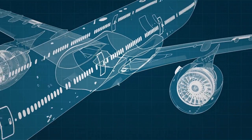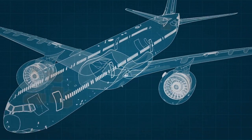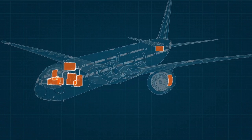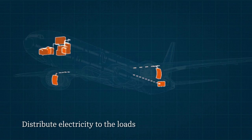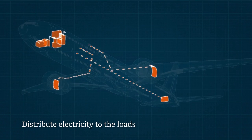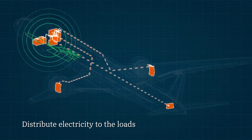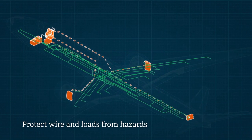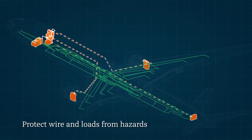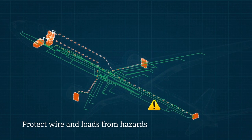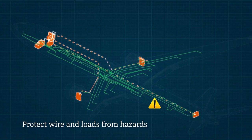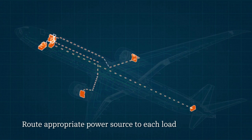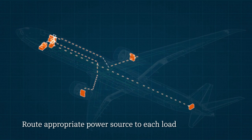The purpose of the power distribution on board an aircraft is three roles mainly. Firstly, to distribute electrical power to the loads on the aircraft. Secondly, to protect the wires and the loads from any electrical hazard. And thirdly, to route the most appropriate power source to each of those loads.